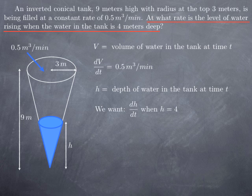What we want to obtain is a rate of change of h, dh over dt, when h is 4. So we have two quantities that vary with time, V and h. We know the rate of change of one, we want the rate of change of the other. As usual the first step is to obtain an equation that relates these two quantities V and h.